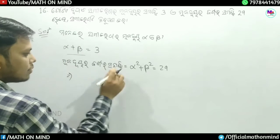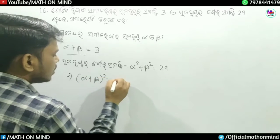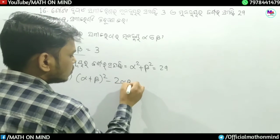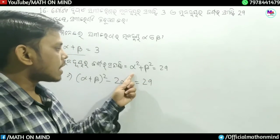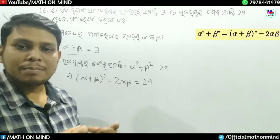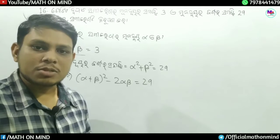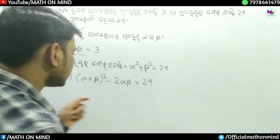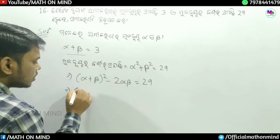So alpha plus beta is 3, then 3 whole square minus 2 alpha beta is equal to 29. That is 9 minus 2 alpha beta is equal to 29.